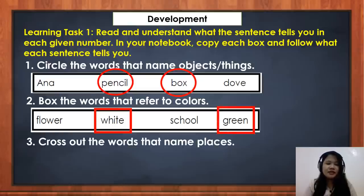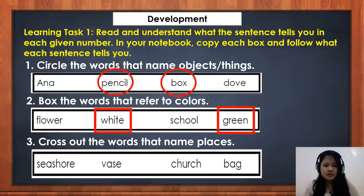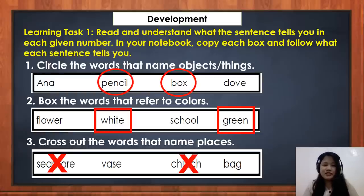Number 3: cross out the words that name places. We have seashore, vase, church, and bag. The words that you should cross out are seashore and church. Do we have the same answer? That's great — that means you are following directions carefully.